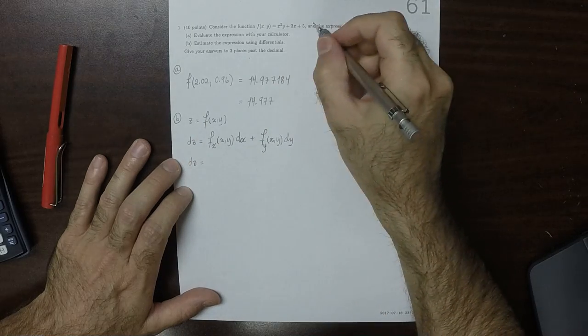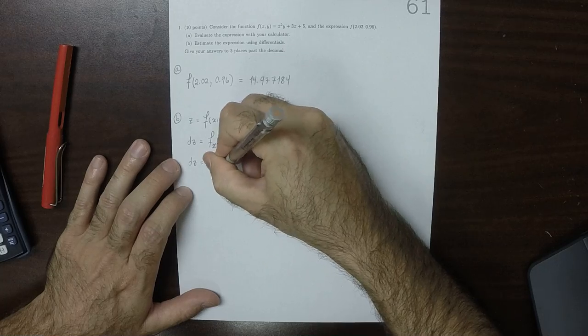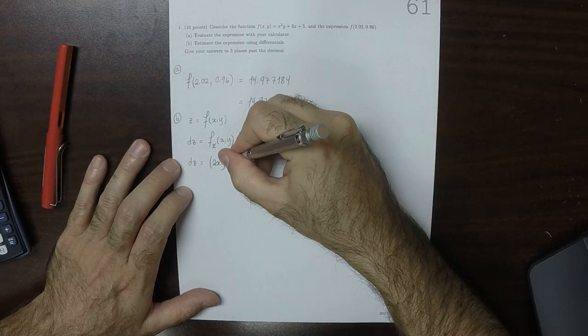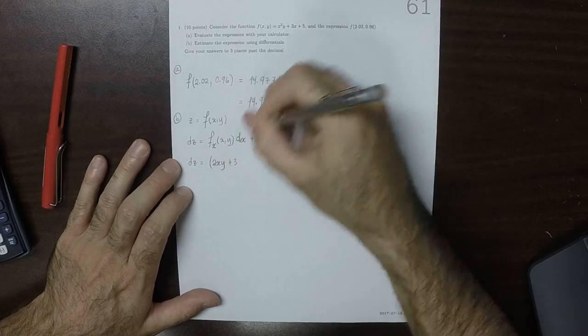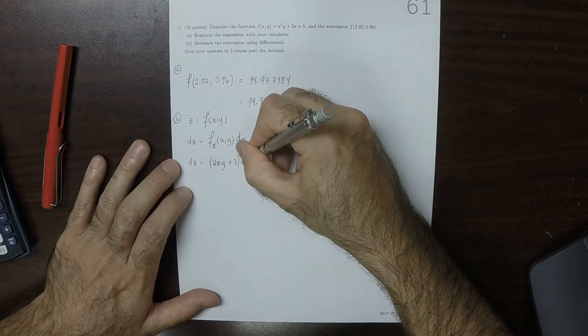So that dz is, well, the x partial of the first term is 2xy, of the next term is 3, and of 5 is 0.